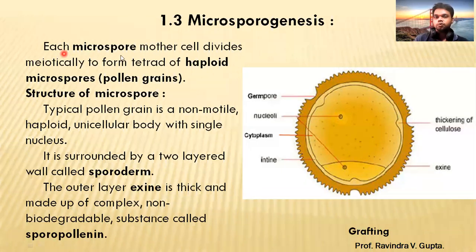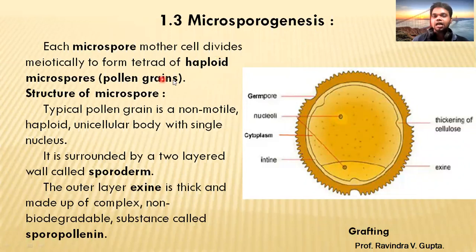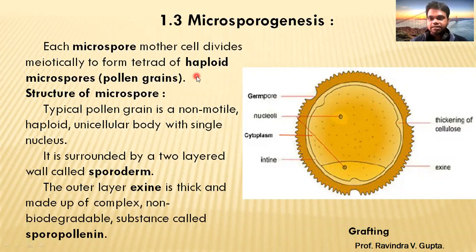Each microspore mother cell divides meiotically to form a tetrad of haploid microspores — that is, a pollen grain.